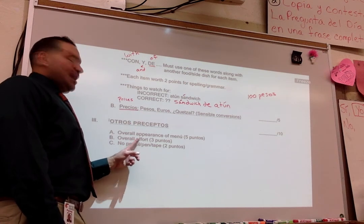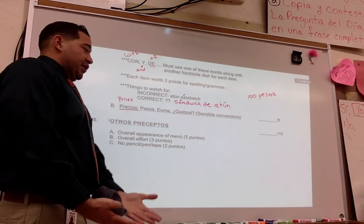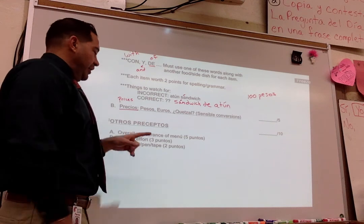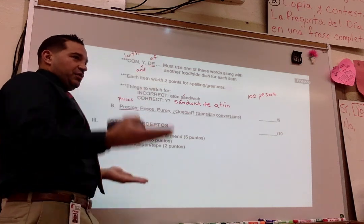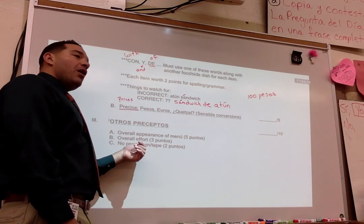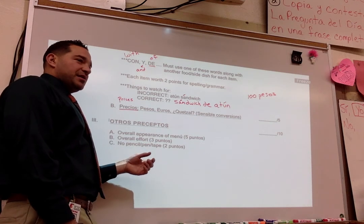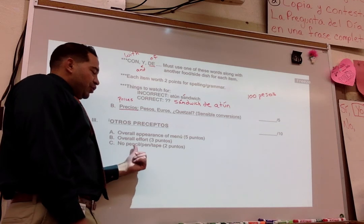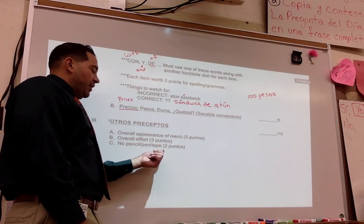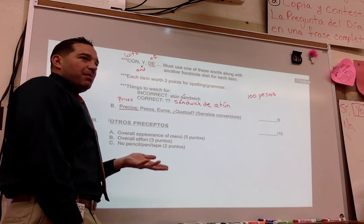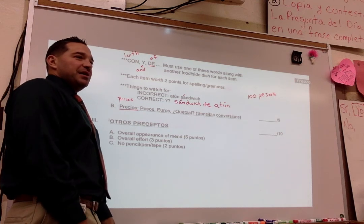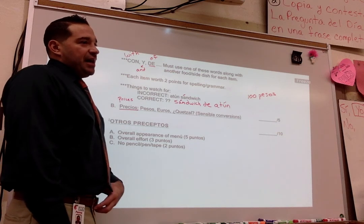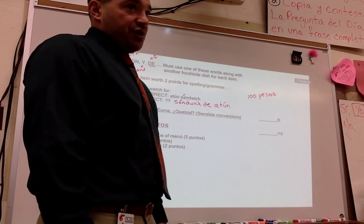Other precepts or other guidelines. Overall appearance of the menu, looking at the whole thing as a whole, would be five points. Remember, the cover is separate, that's a separate grade on the front. The overall appearance of the menu in general is five points. Overall effort is three points. And we'll talk more about the art part a little bit later. There should be really no pencil or pen showing. What are we supposed to use then? Markers, colored pencils. So you're going to do this now, but you're going to do it on loose leaf first.